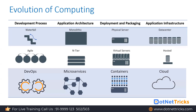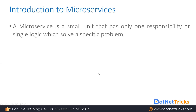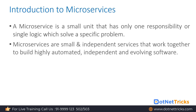In the modern style, we use DevOps as a development process, microservices for application architecture, containers for deployment and packaging, and the cloud for infrastructure. A microservice is a small unit that has only one responsibility — it contains a single logic which solves a specific problem. Don't confuse it with the word 'service'; a microservice is a small unit of the project that solves a specific problem.